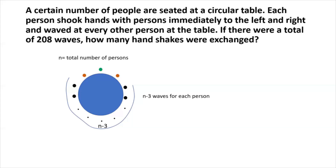So how many persons are there in all? Well, n persons. What would be the total number of waves? n multiplied by n minus 3. And this is what's given as 208, so n multiplied by n minus 3 equals 208.